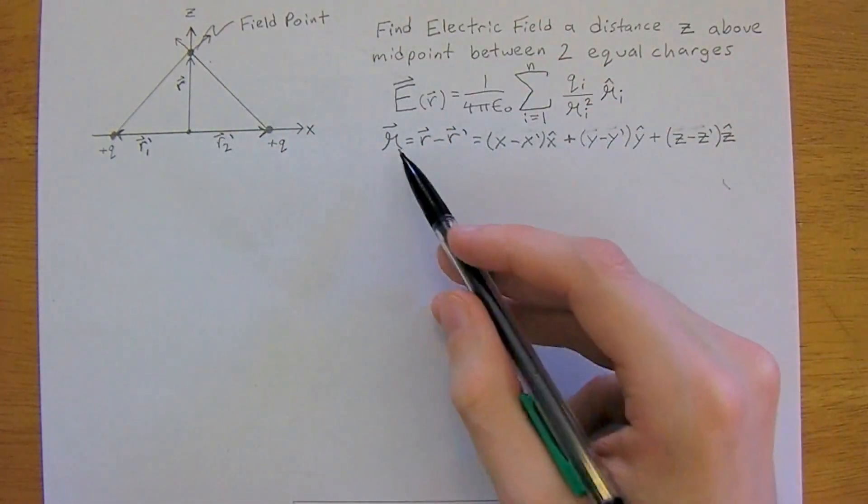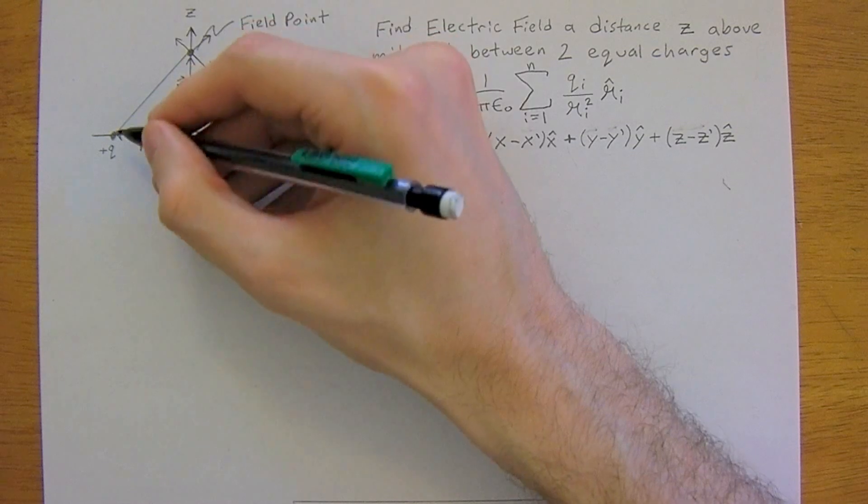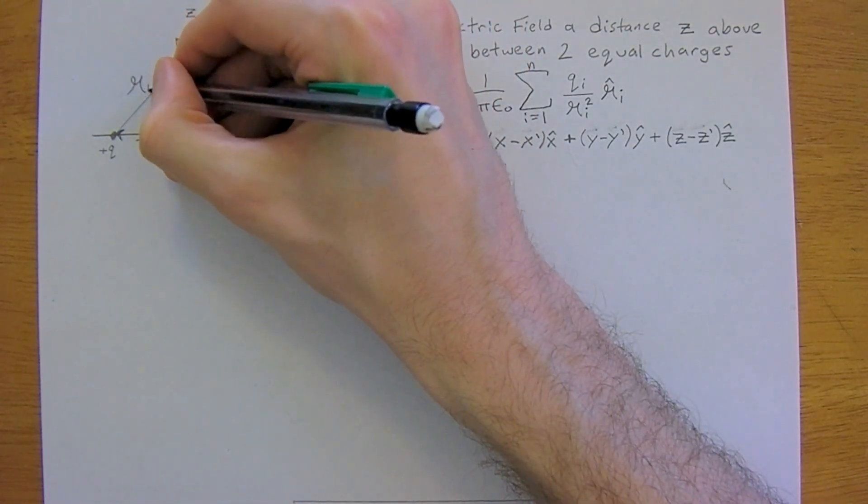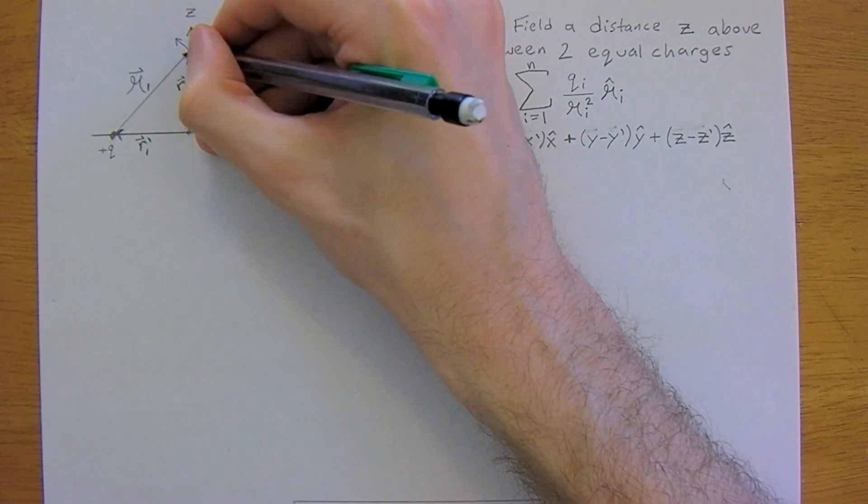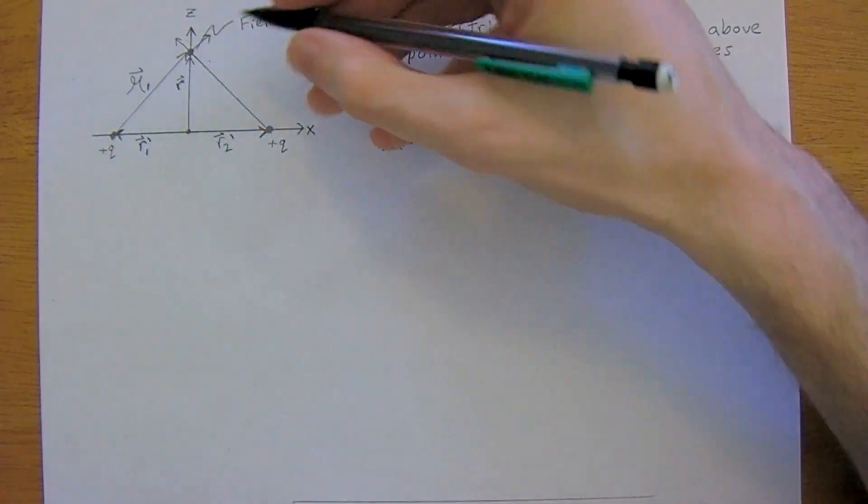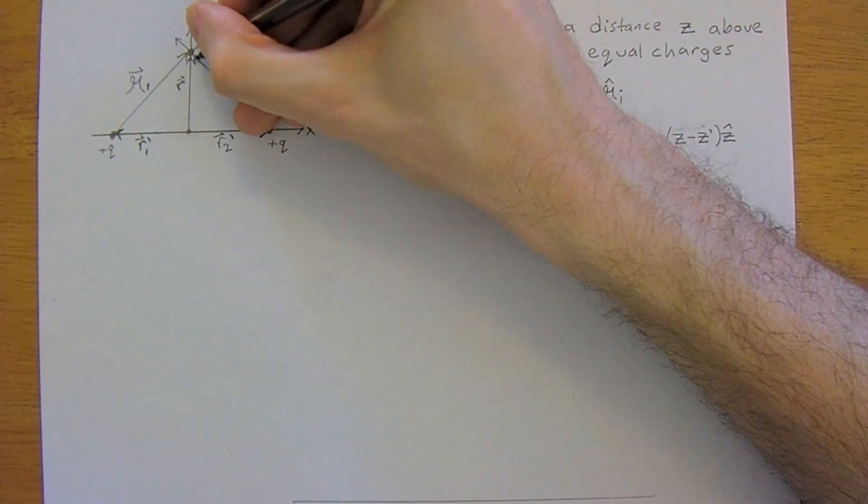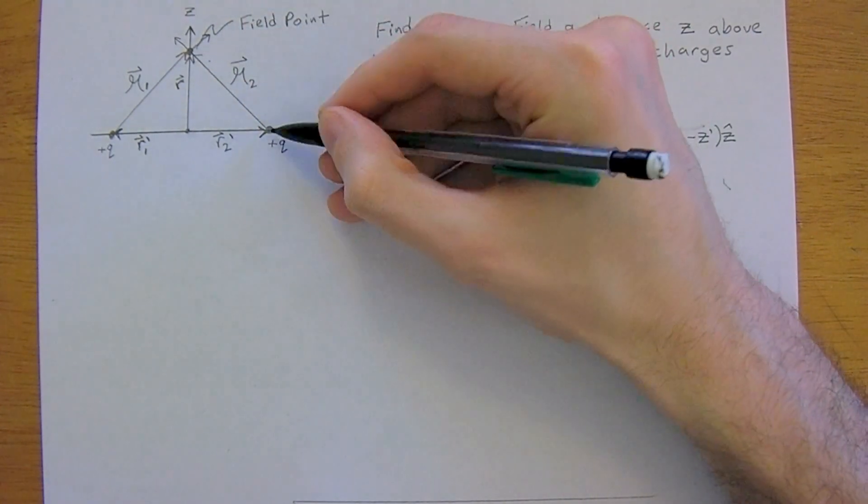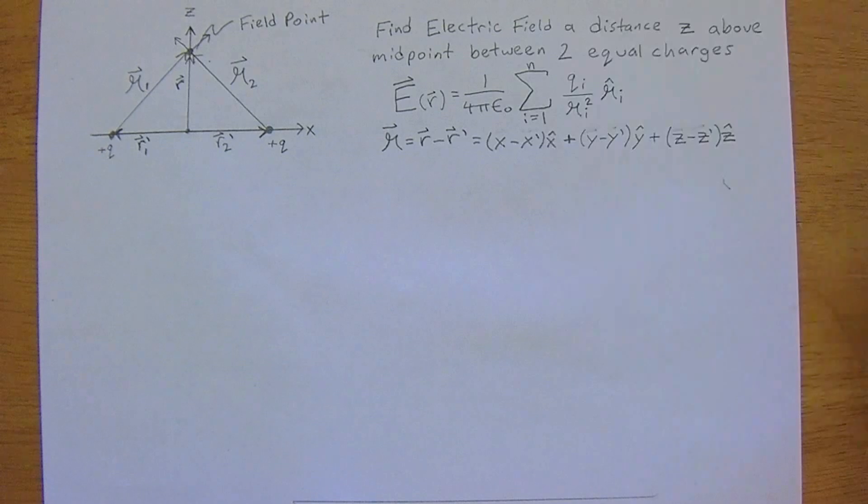And then we want the script r going from the source point to the field point. So script r1 goes like this, and script r2 is going to go from the other source point to the field point. So now we have it set up, we just need to acquire the information.